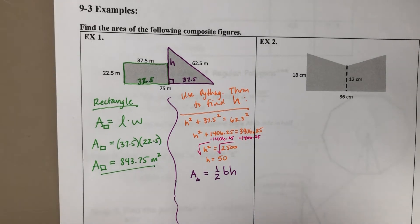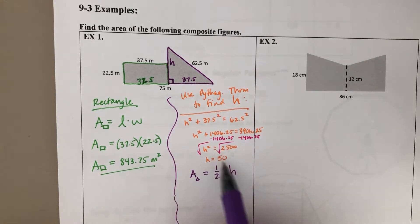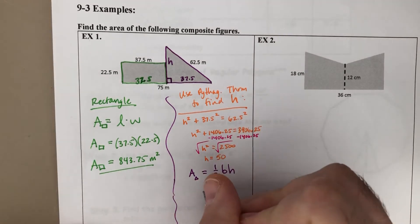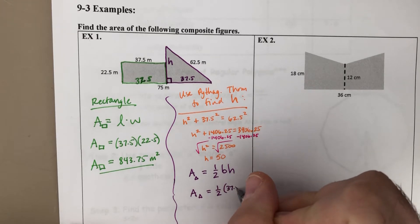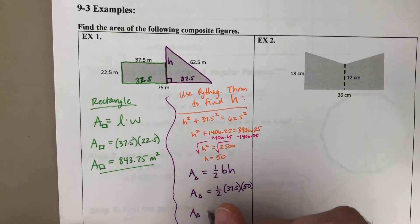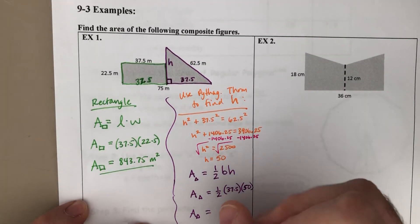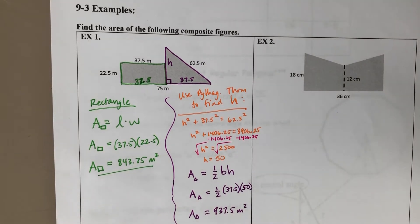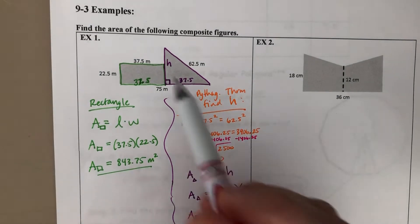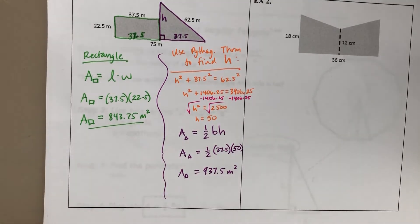And now, again, go back to our area of a triangle formula. We now know the height. We have the base, 37.5. We now have the height. We got the piece we need. We can go ahead and plug them into our formula here. So the area for this triangle, 1/2 times the base times the height. So the 37.5 times 50, then divided by 2 is going to get us an area of the triangle of 937.5 square meters. So there's our area of the triangle.